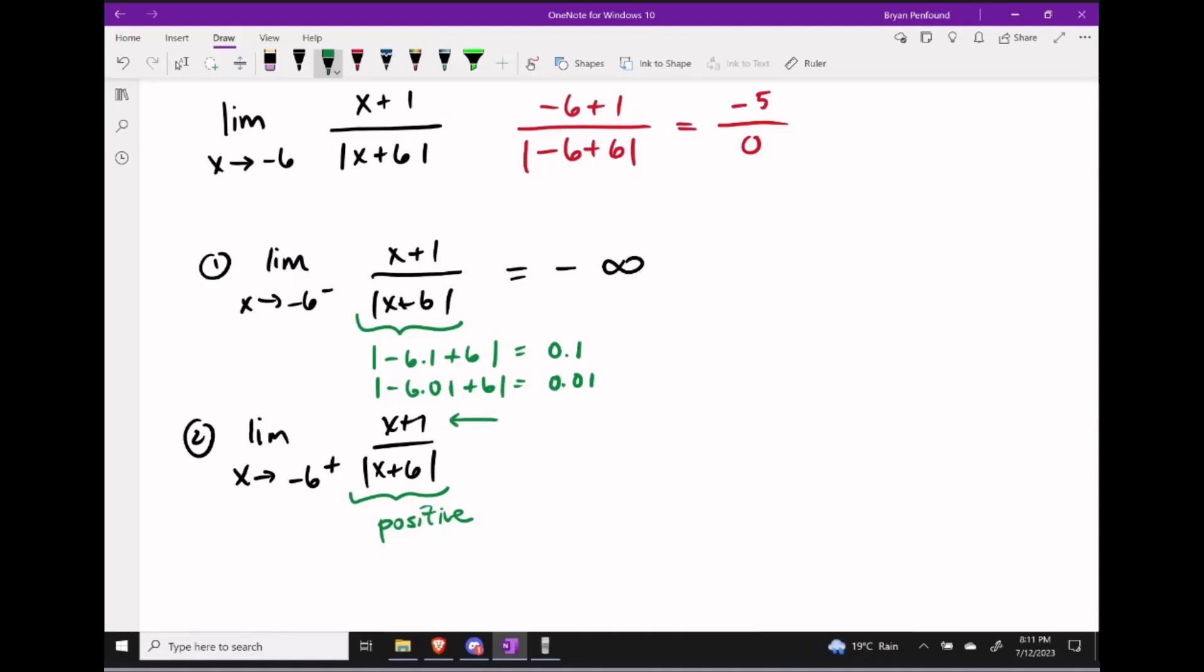In this case, we could start substituting in values like negative 5.9 or negative 5.99, and we see that the numerator's always going to be negative once again.